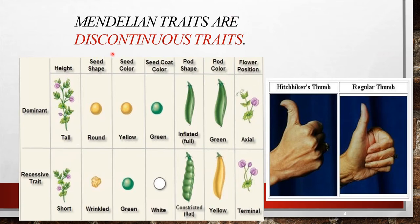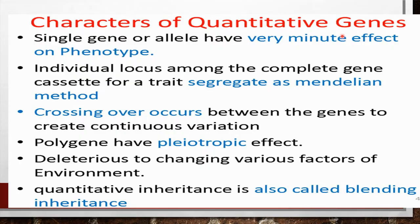Mendelian traits come under discontinuous traits. For a discontinuous trait, a single gene or allele has a minute effect on phenotype. Individual loci among the complete gene cascade for a trait segregate by Mendelian methods. Crossing over occurs between genes to create continuous variation. Polygenes have pleiotropic effects and can alter various environmental factors. Quantitative inheritance is also called blended inheritance.